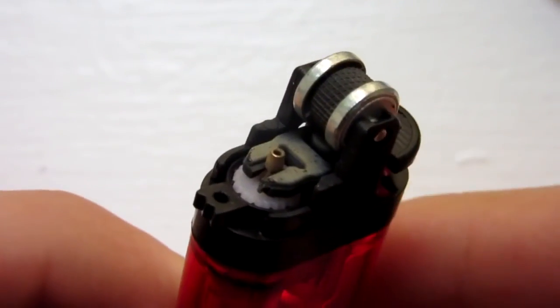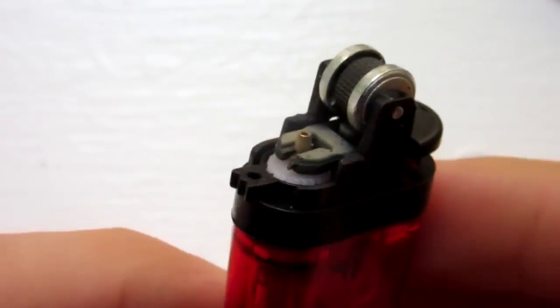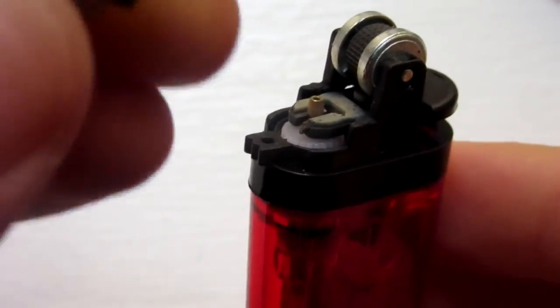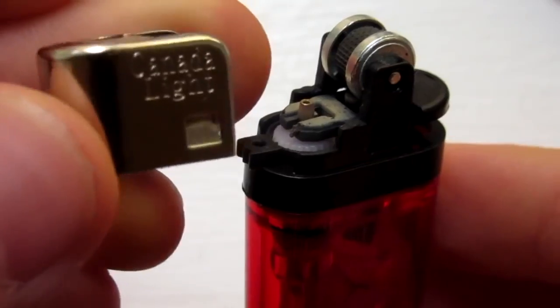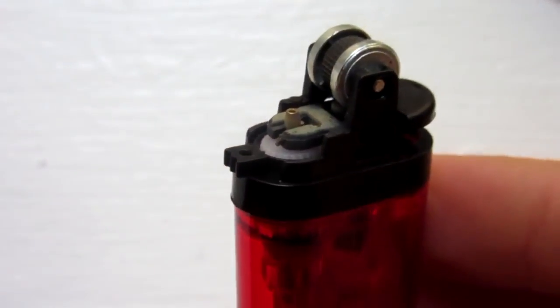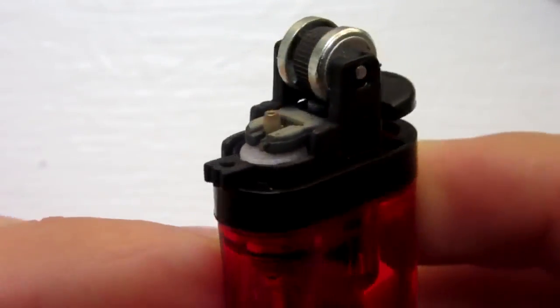So as you can see, I have removed the metal casing, and this is what it looks like right here. That just popped right off. And so now, to adjust the flame,